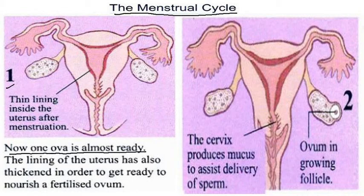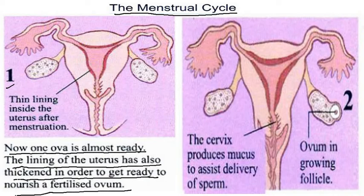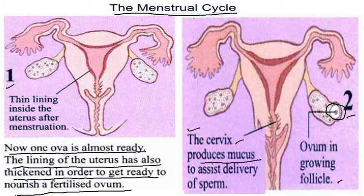One ovum is almost ready, and the lining of the uterus has thickened in order to get ready to nourish the fertilized ovum. Second step: ovum is growing. The cervix produces mucus to assist delivery of the sperm — a liquid flows so the sperm can find its path forward.